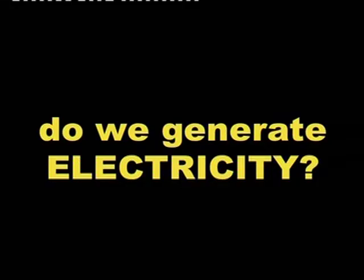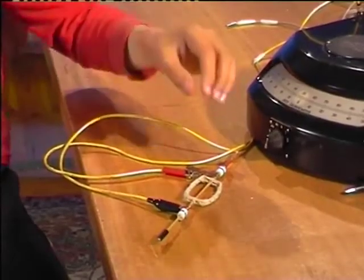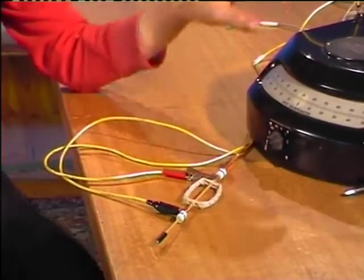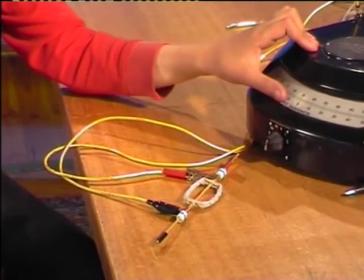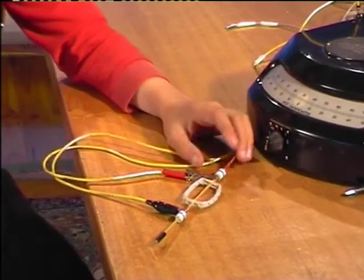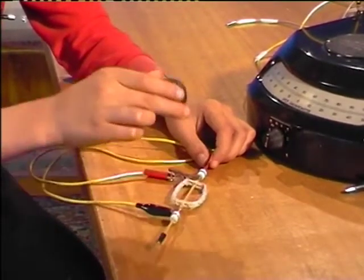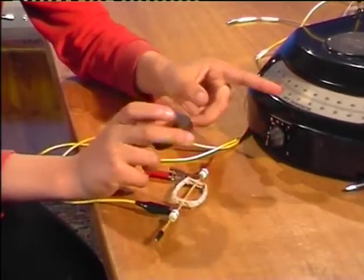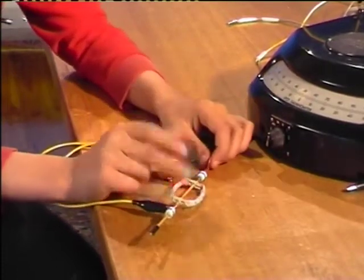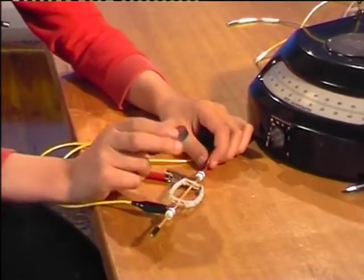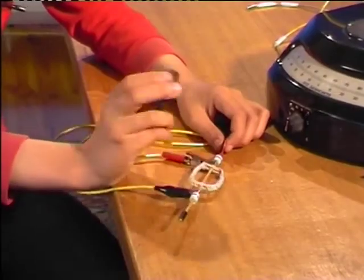How do we generate electricity? Here is a coil connected up to the meter. If I pass the magnet over the coil, the meter will show up. You can see it on this little spot here. We are generating electricity.